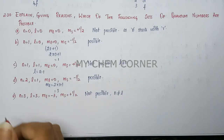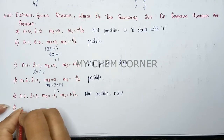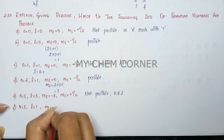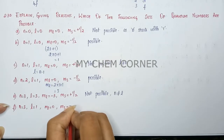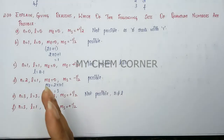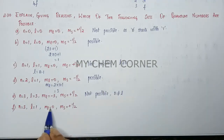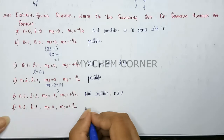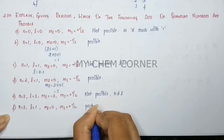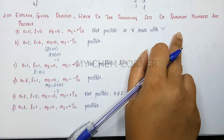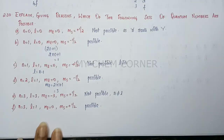The last question: n is equal to three, l is equal to one, ml is equal to zero, and ms is equal to plus half. Here l can go up to n minus one, which is two, so l equals one is valid. When l is one, ml values range from -1 to +1, so zero is valid. All these values are valid, which means this particular orbital is possible. So though the questions may seem complicated, if you work from basics it is a much easier problem.